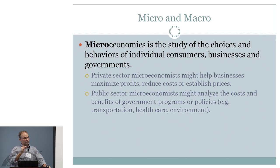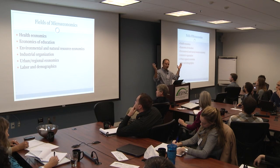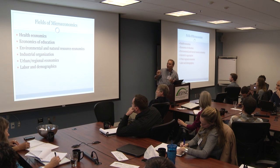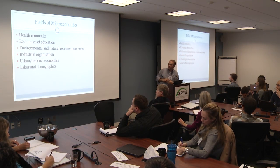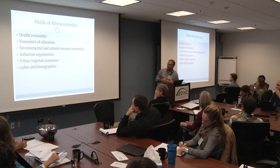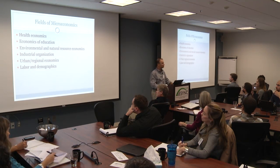Microeconomics is a fine-tuned look at the way people behave, interact, and trade things. An analogy I like: if the economy is a forest, the macroeconomist is flying over it in an airplane getting a sense of the big picture — what does the whole ecosystem look like? The microeconomist is walking through the forest, looking at individual interactions. Microeconomic fields include health, education, industrial organization, regional, labor, and demographics. Economists study all of this.